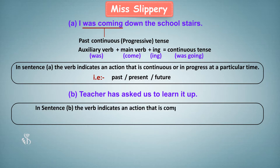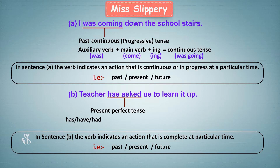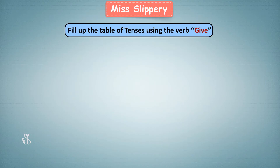That means auxiliary verb plus main verb plus -ing is equal to continuous tense. In sentence B, the verb indicates an action that is complete at a particular time — that is, past, present, or future. The verb is then said to be in perfect tense. 'Has asked' is said to be in present perfect tense. Has, have, or had plus verb in past participle form is equal to perfect tense.